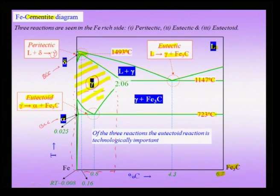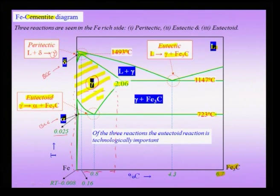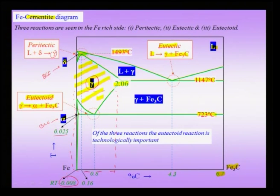The alpha phase has very low solubility of carbon, unlike gamma which can dissolve up to 2 percent carbon at about 1147°C. The solubility of carbon in BCC iron keeps falling — it is maximum at the eutectoid temperature of 723°C at about 0.025 percent, and falls to 0.008 percent at room temperature. Therefore, most carbon is present as cementite when slowly cooling a eutectoid composition of 0.8 percent carbon — the eutectoid composition we will repeatedly encounter.